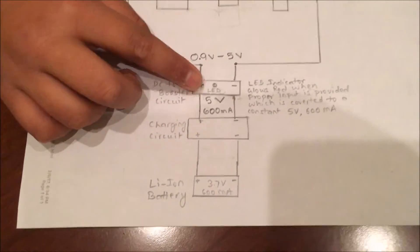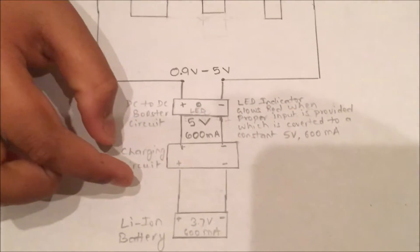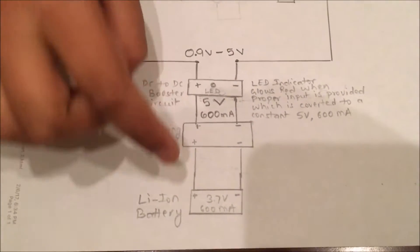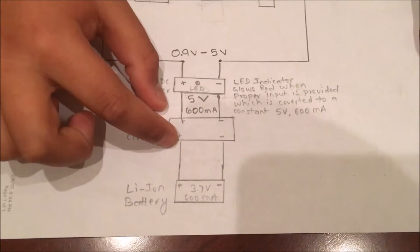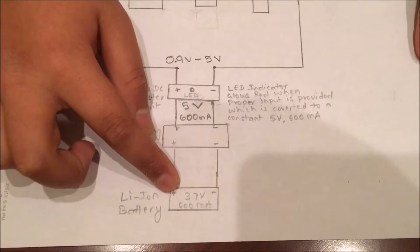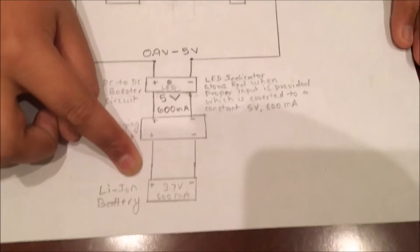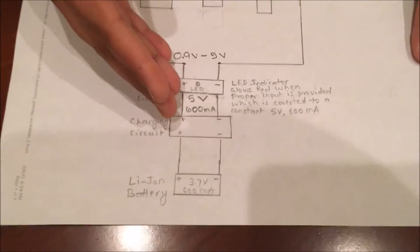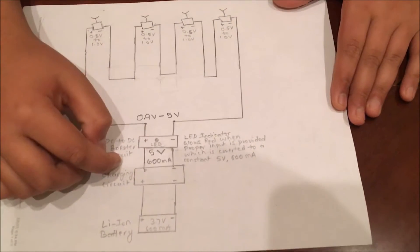After the booster, the most essential part in this circuit is the charging circuit. This regulates the amount of voltage that goes to the battery. Since this is a lithium ion battery that is where all the current ends up, it is prone to explosions. So the charging circuit is essential.